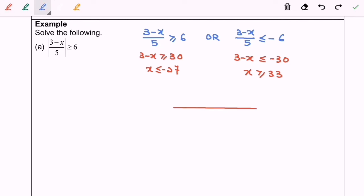So now I'm going to illustrate the situation on a real number line. So let's plot the values. A dense circle for negative 27, x is less than or equal to negative 27. Another dense circle, x is greater than or equal to 33.